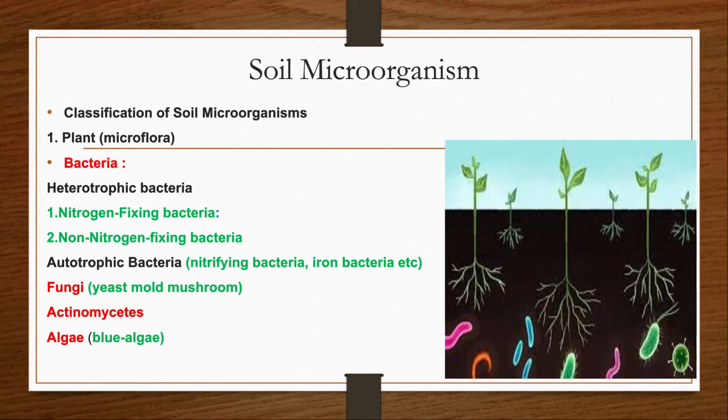Classification of soil microorganisms. Soil microbes are divided into two groups: microfauna and microflora. Microflora includes bacteria, fungi, algae, and actinomycetes. There are two types of bacteria in soil: heterotrophic bacteria and autotrophic bacteria. Heterotrophic bacteria are divided into nitrogen-fixing bacteria and non-nitrogen-fixing bacteria.